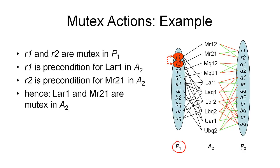We know that proposition R1 is a precondition for the action LAR1 in action layer A2, and proposition R2 is a precondition for MR21 in the same action layer. It should be clear that if these two propositions, which are preconditions for these two actions, are mutually exclusive — meaning they cannot both be true in this proposition layer — then the two actions cannot occur in the following action layer. So these two actions must be mutually exclusive.